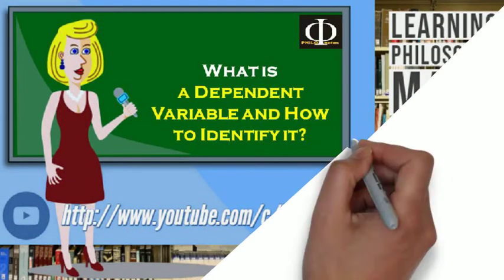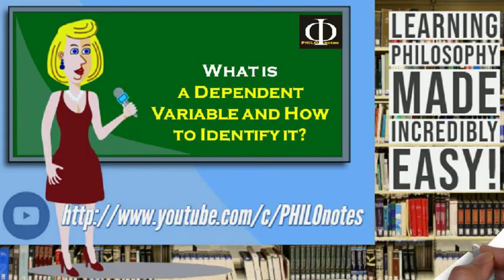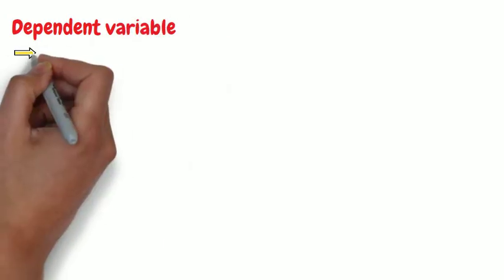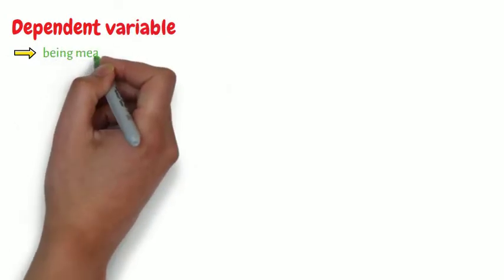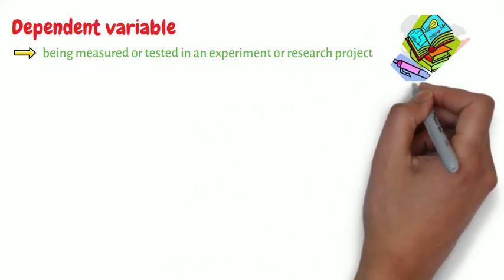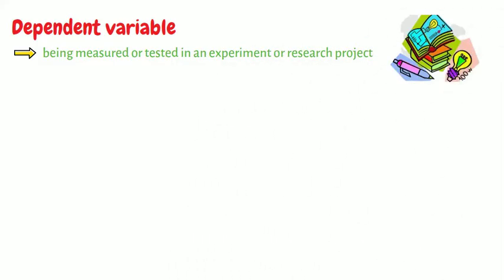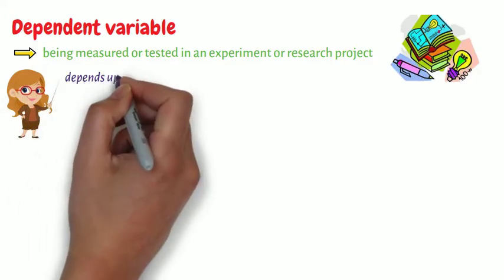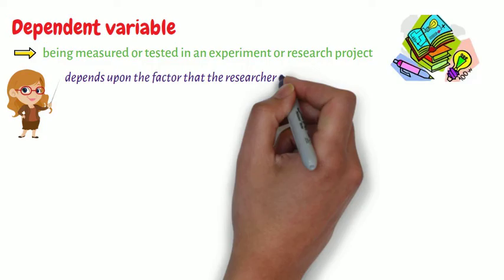What is a dependent variable and how to identify it? The dependent variable is the variable that is being measured or tested in an experiment or research project. In other words, as the name suggests, the dependent variable is the variable that depends upon the factor that the researcher controls or manipulates.